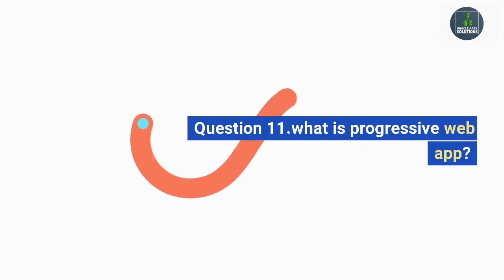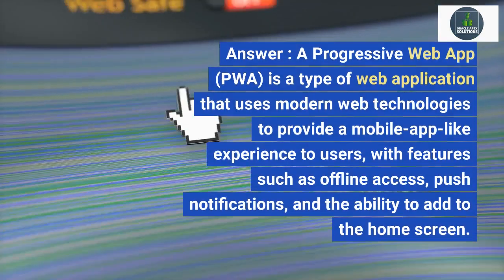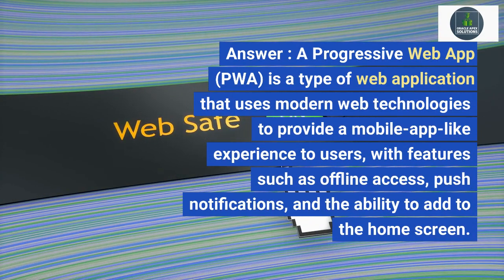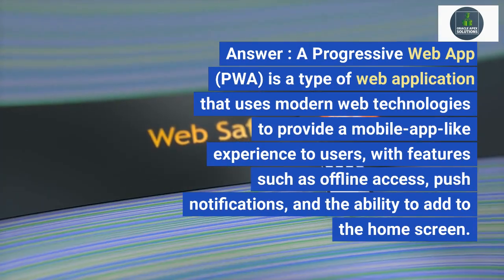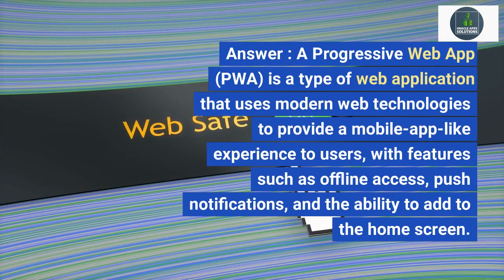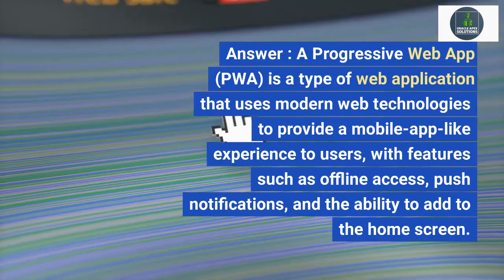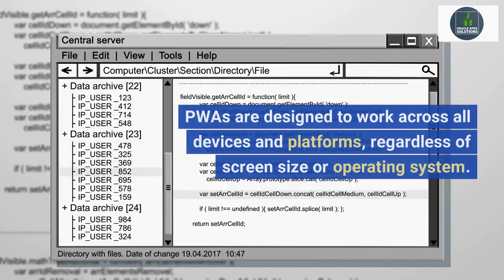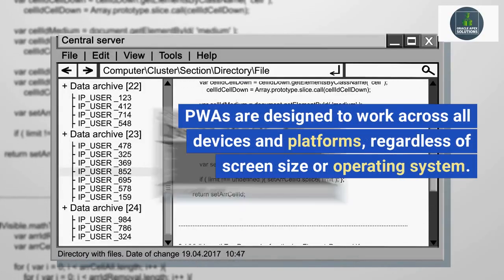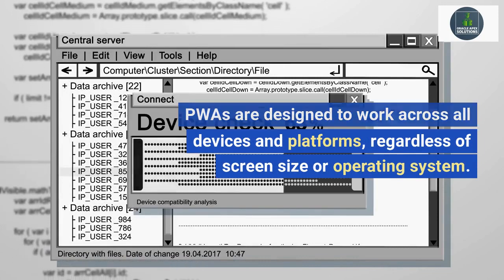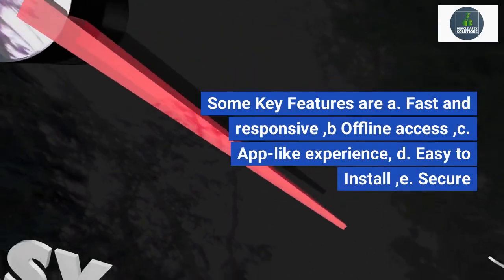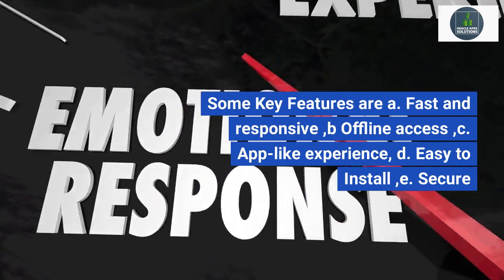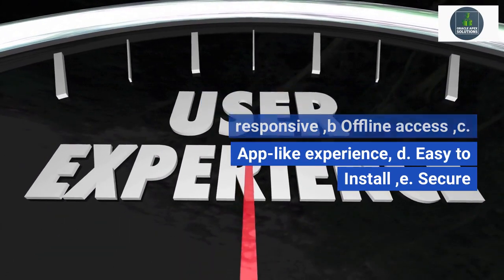Question 11. What is a Progressive Web App? Answer. A Progressive Web App (PWA) is a type of web application that uses modern web technologies to provide a mobile app-like experience to users, with features such as offline access, push notifications, and the ability to add to the home screen. PWAs are designed to work across all devices and platforms, regardless of screen size or operating system. Some key features are: A. Fast and responsive. B. Offline access. C. App-like experience. D. Easy to install. E. Secure.